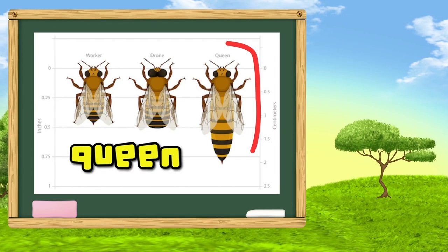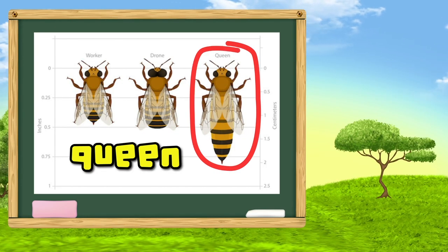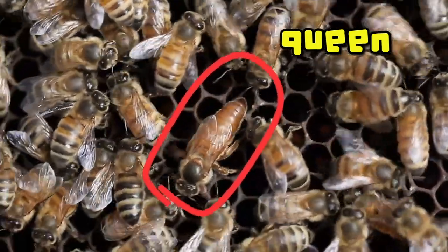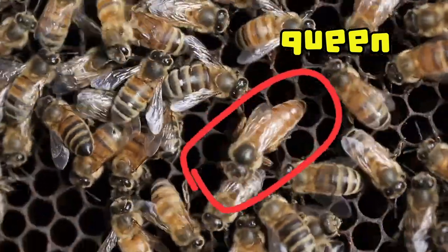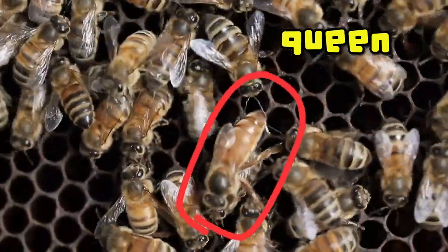The queen bee is busy laying eggs, and they all live together in the hive. There's only one queen bee in the hive, and it lays thousands of eggs.